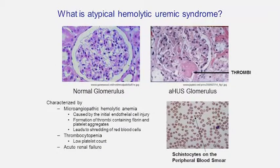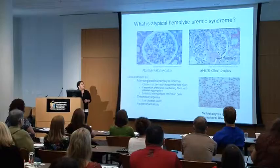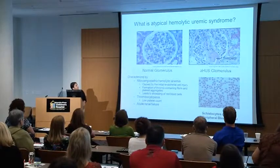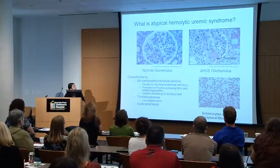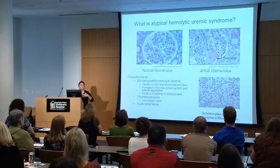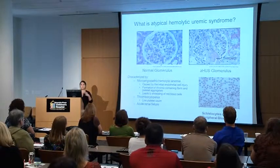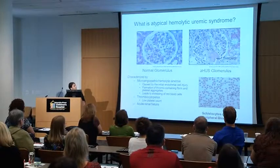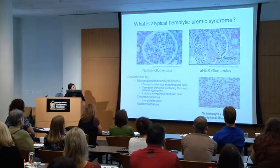This is the triad where you have microangiopathic hemolytic anemia, and this is caused by that initial cell injury that the MAC complex causes. Here's a glomerulus in a healthy individual — you can see that the capillaries are nice and wispy and thin — and then in a patient with aHUS, you get these thrombi.